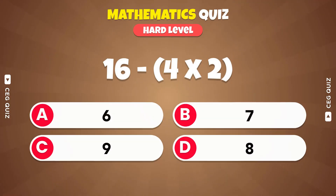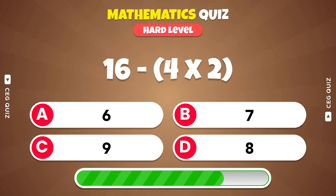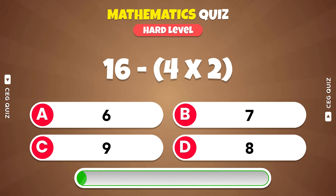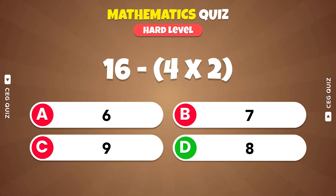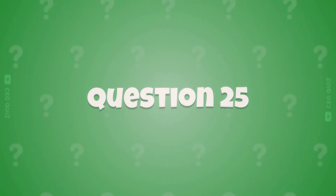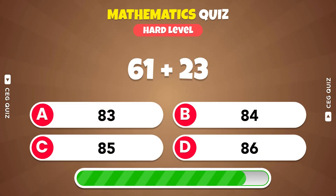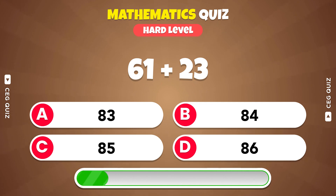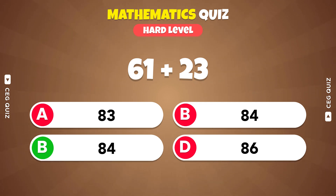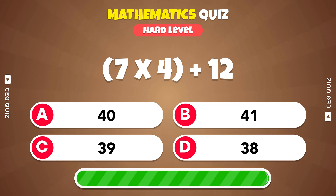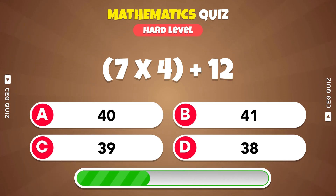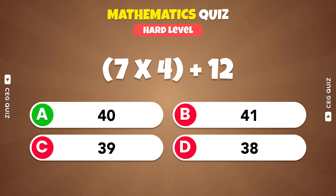Solve 16 minus 4 times 2. Option D, 8. What is the sum of 61 and 23? 84. Calculate 7 times 4 plus 12. It's 40.